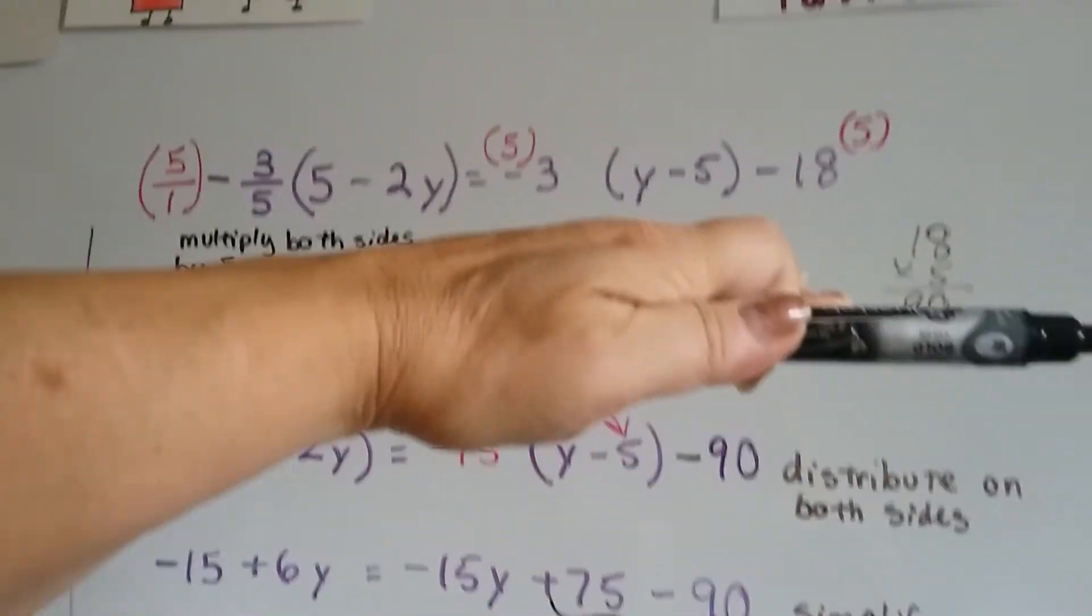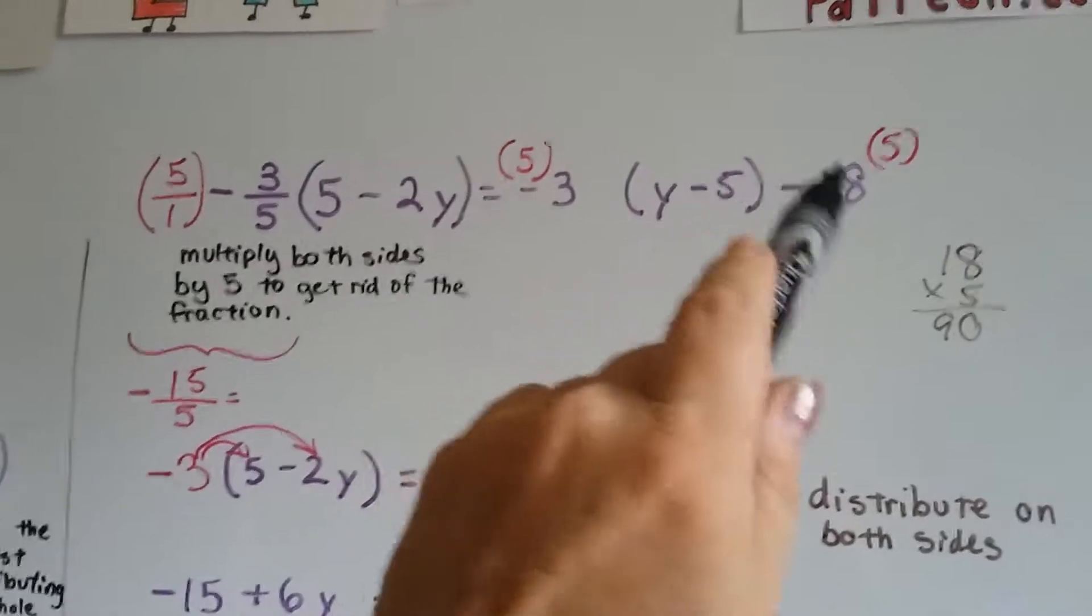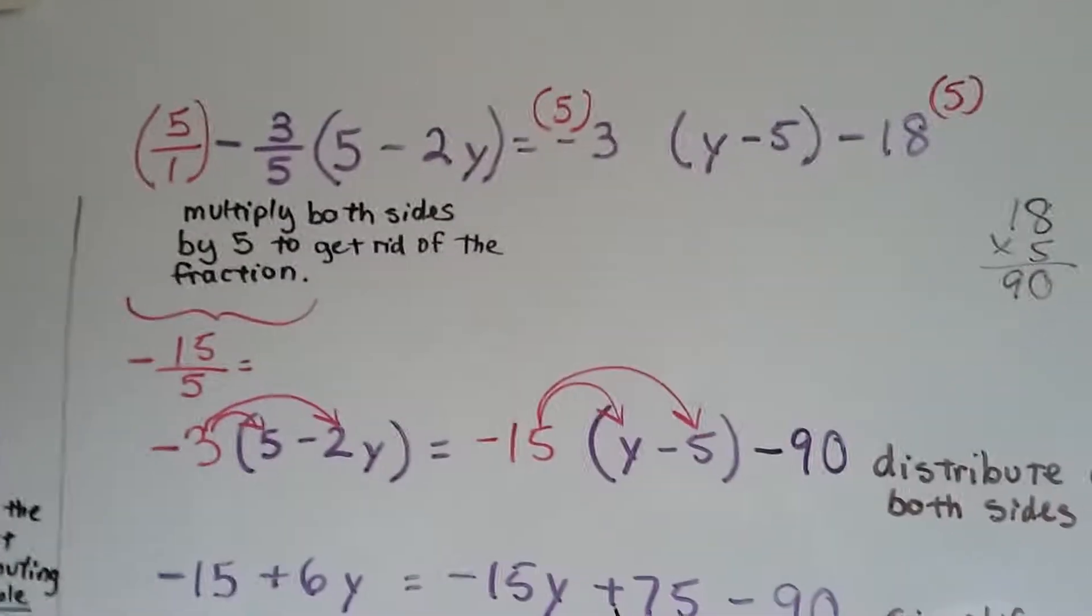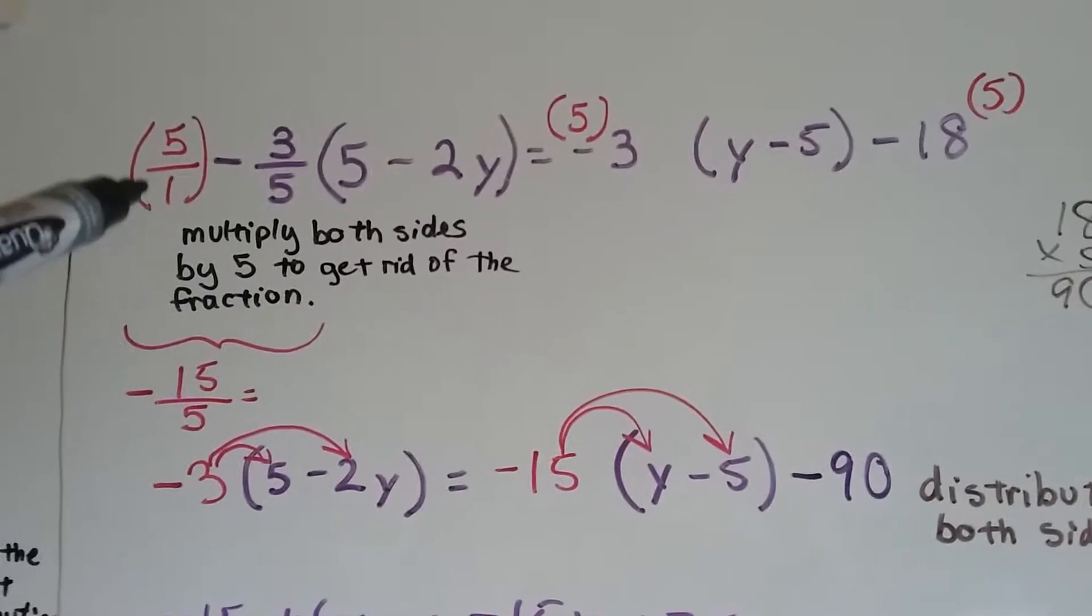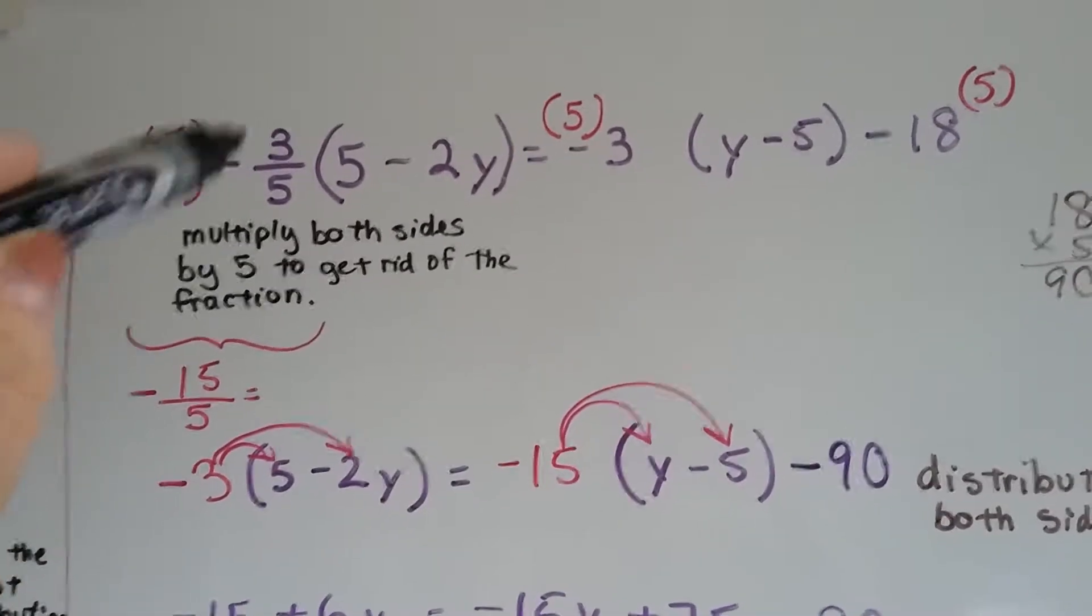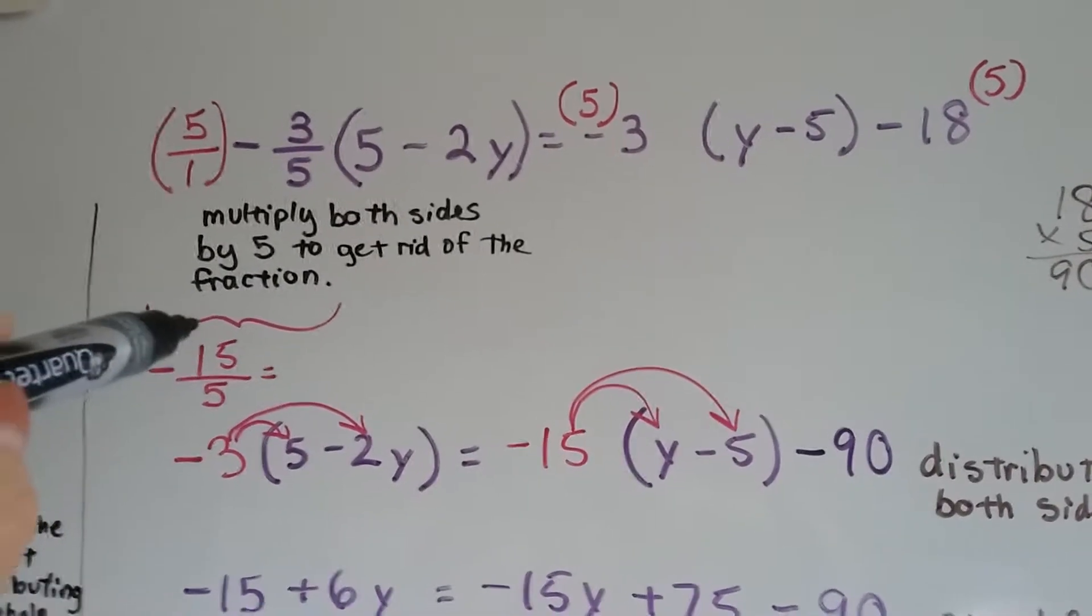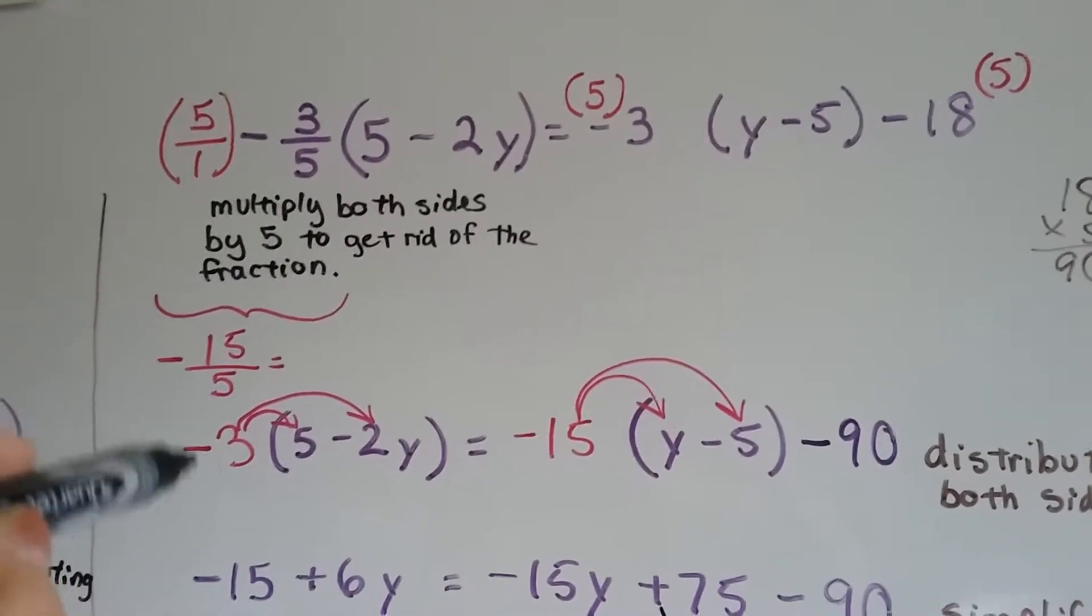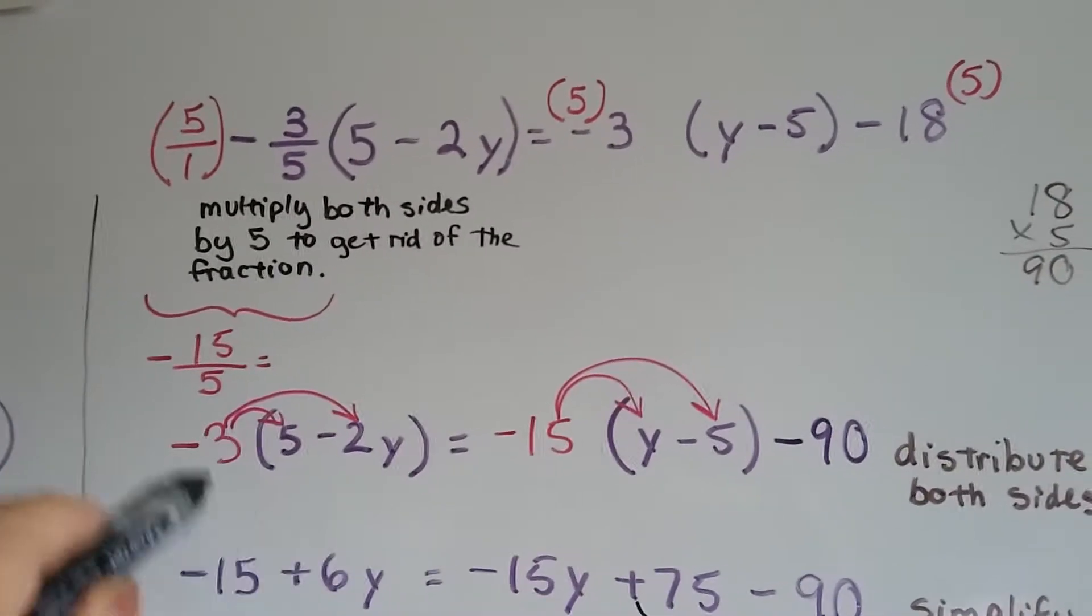The entire equation is lifted by being multiplied by 5, not just part of it, because then it wouldn't be fair. We do that, and I wrote it as 5 over 1 to make it easier on my eyes. 5 times negative 3 is negative 15, and 1 times 5 is 5. Negative 15 over 5 simplifies to negative 3. Now the left side of the equation looks like this.